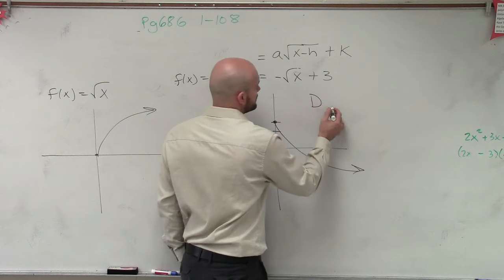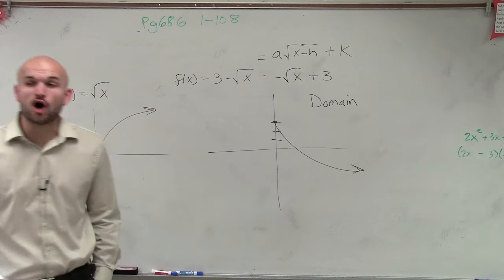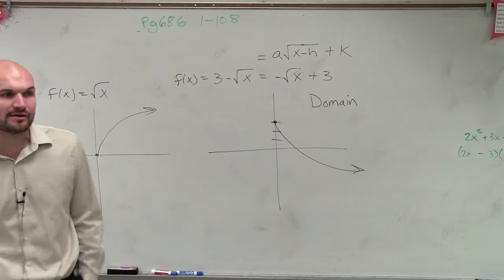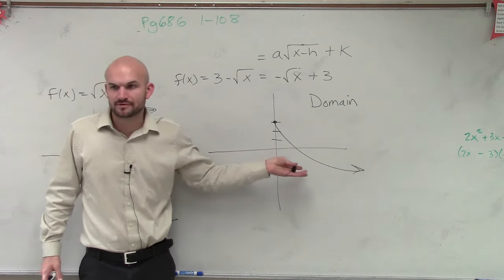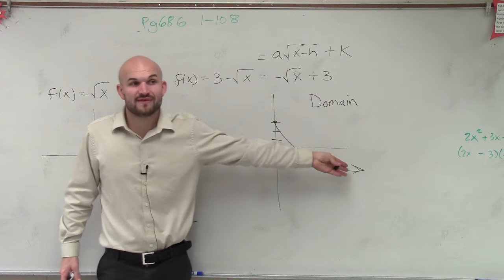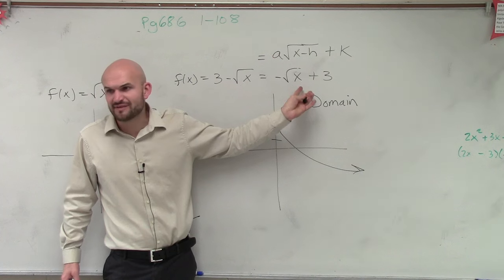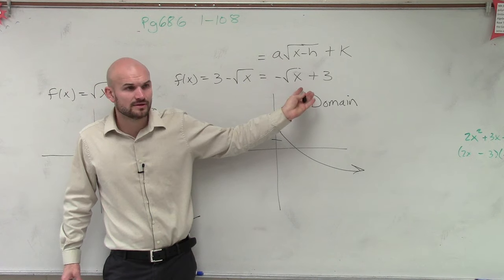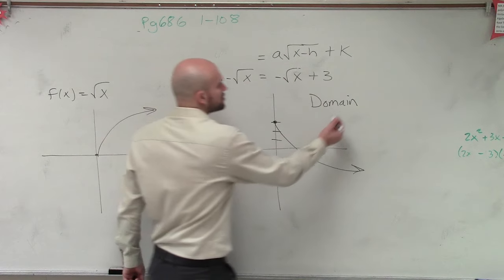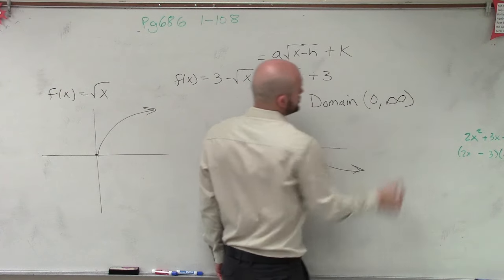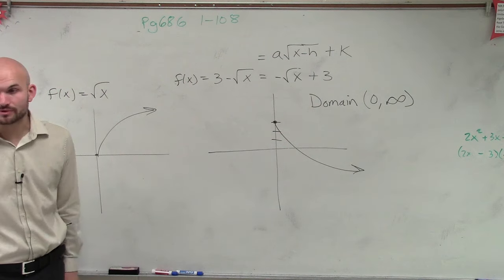So if you're going to look at the domain, the domain is all the x values that you can evaluate for your function. So are there any x values that are negative that are part of this graph? No, it's only positive values. If you put in a negative number in for x, can you evaluate that for a value? Can you take the square root of a negative? No. So therefore, our domain is from 0 to infinity, because you can evaluate the square root of 0.